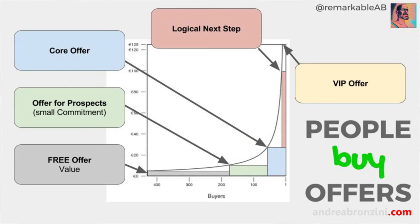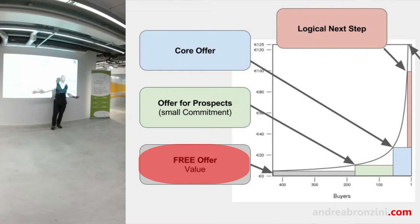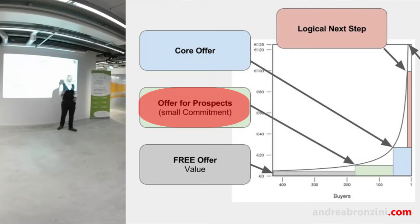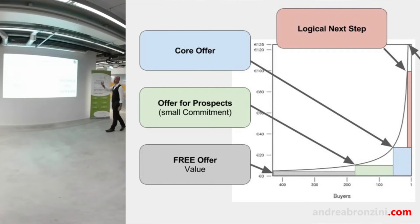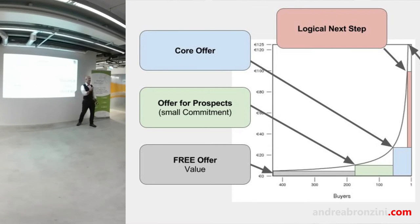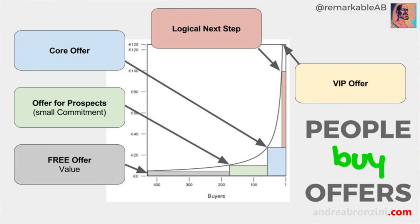Instead, you should have different offers for the same product. Start with something free to show competence in your field. Then have an offer for prospects — a small commitment, even just an email opt-in, or maybe 5 euros for an information product. Then your core offer — the same product you had before. Then a logical next step for customers who want to solve the problem even more. And finally a VIP package for those who really want to spend and give you money.